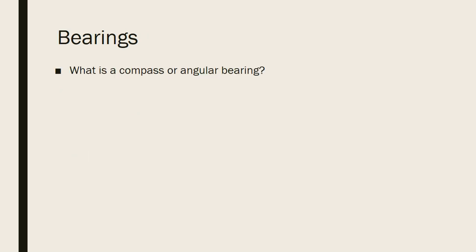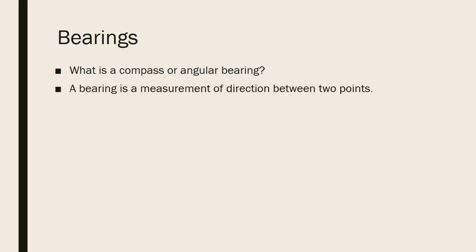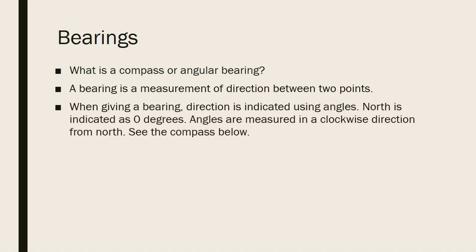So what is a compass or angular bearing? A bearing is a measurement of direction between two points. When given a bearing, direction is indicated using angles. Angles are measured in a clockwise position from north.